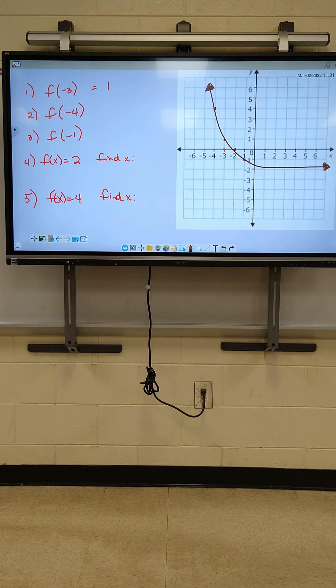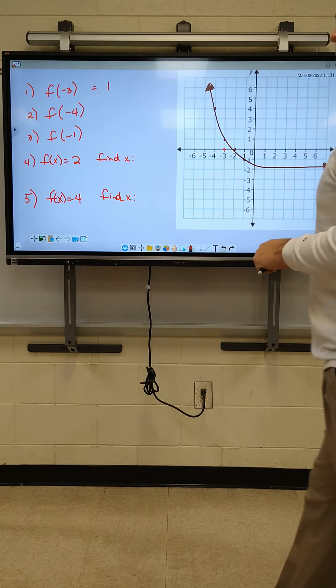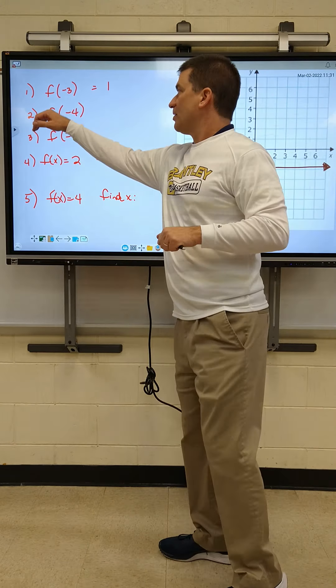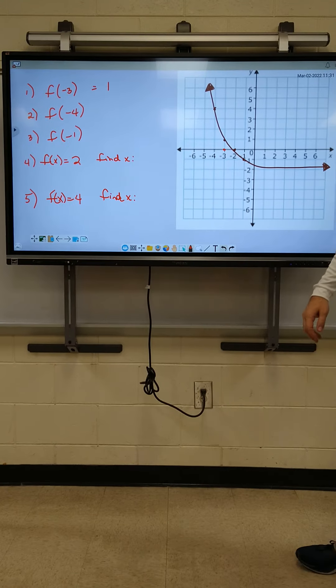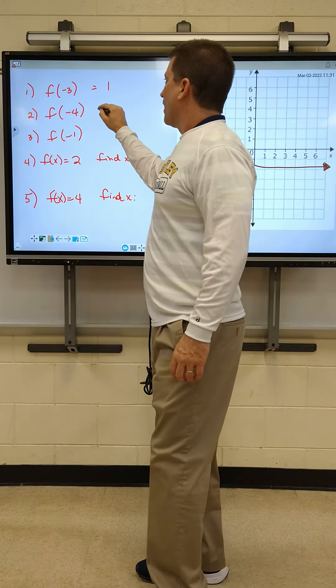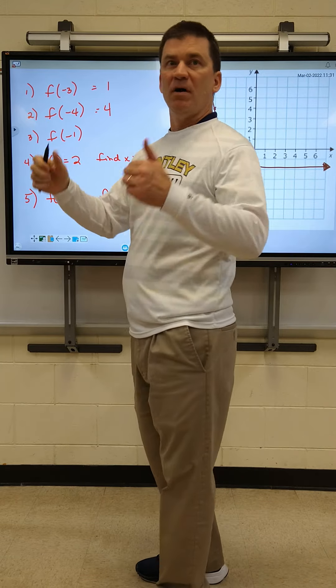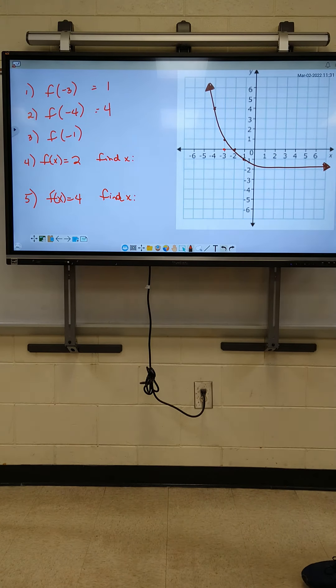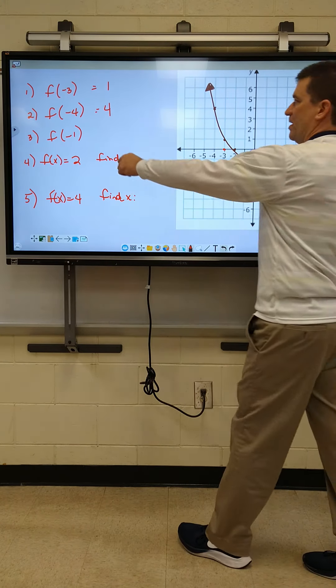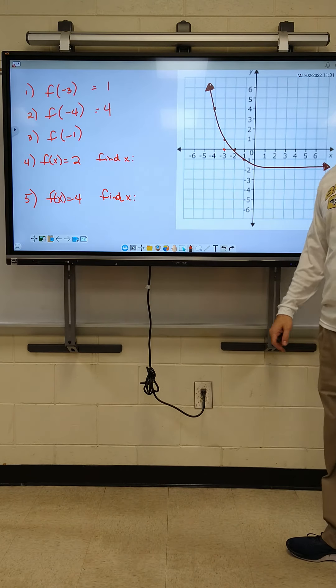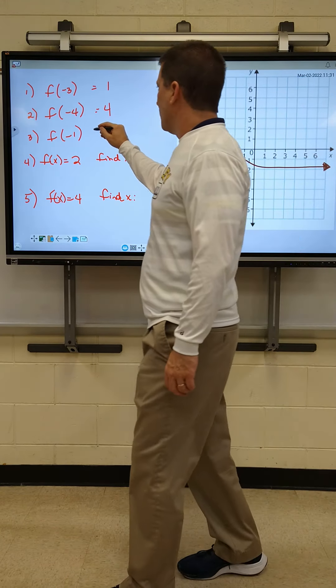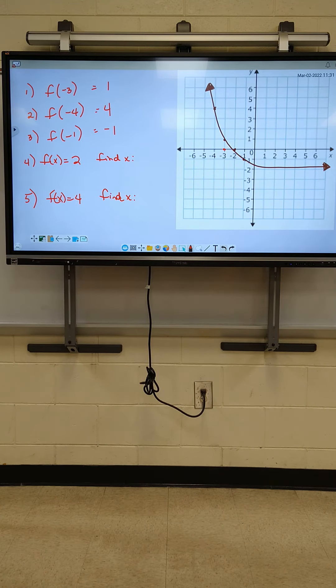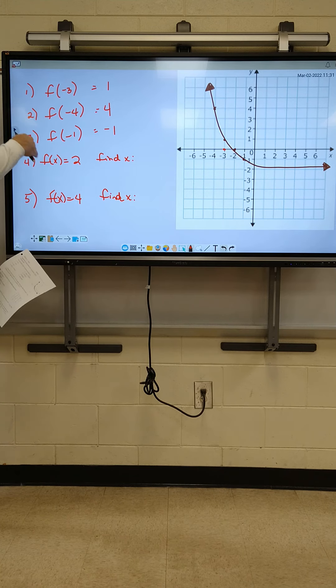All right, Mikey, what did you get on number two? When you go to negative four, where does it hit the line at? Two. I agree with Mikey. Anybody got a question on that one? Everybody good? Count up. One, two, three, four. It's four. Just count it up. All right, Carter, you got the next one. Go to negative one and see where it hits the line. Negative one hits at negative one. I agree. Nobody should miss one of them first three at all.